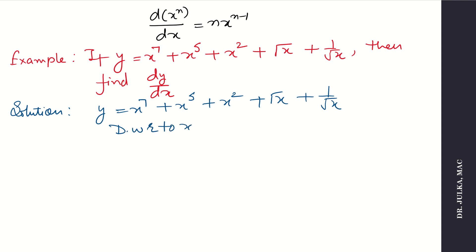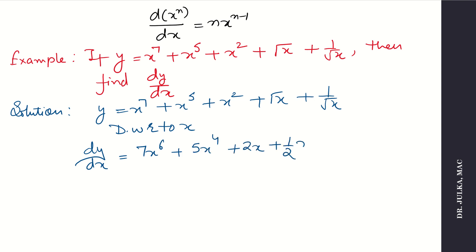Now taking the derivative with respect to x using our formula: dy by dx equals 7x to the power 6 plus 5x to the power 4 plus 2x plus 1 by 2 x to the power minus 1 by 2 plus x to the power minus 3 by 2.